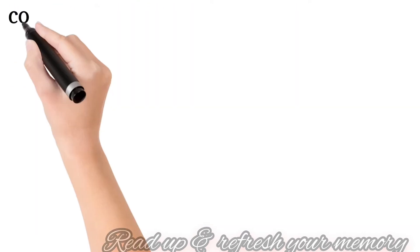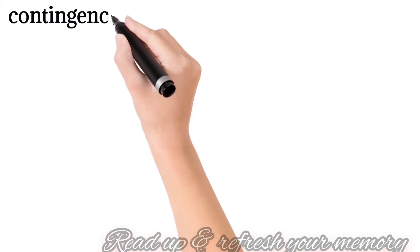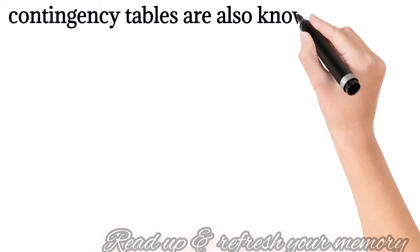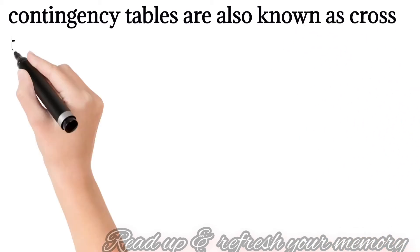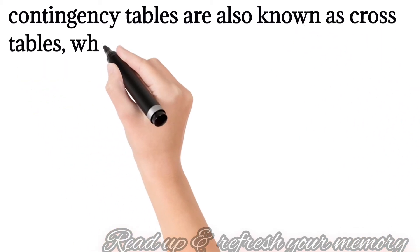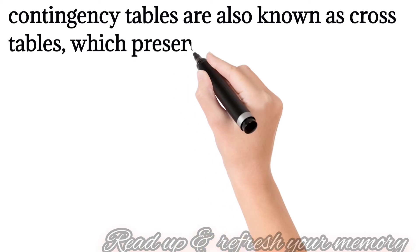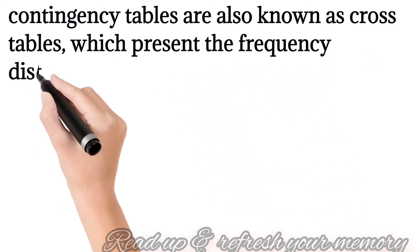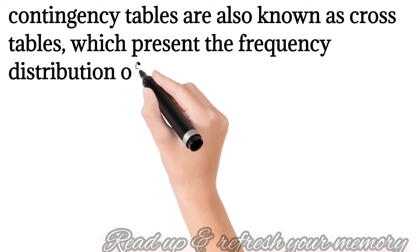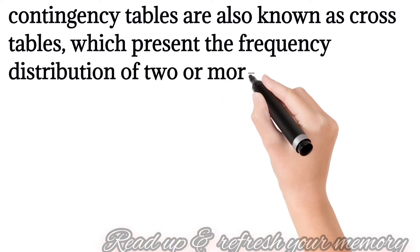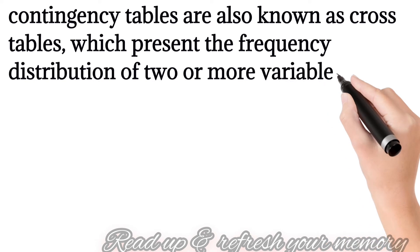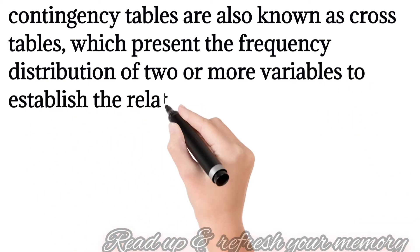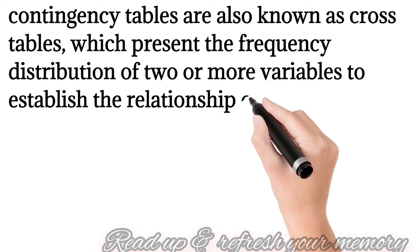Observation cannot fall outside the categories. Contingency table is also known as cross table, which presents the frequency distribution of two or more variables to establish the relationship or association among them. It is used to study the correlation between the two variables.